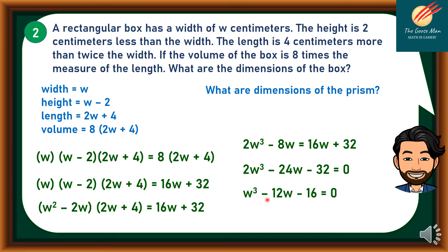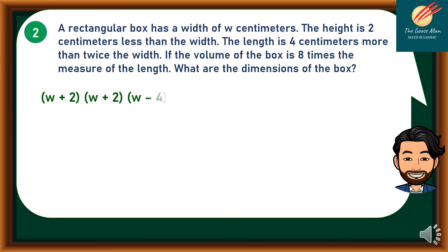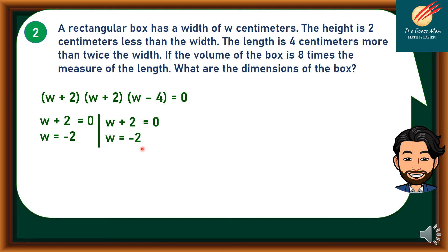Using the factoring method with synthetic division, we come up with (w plus 2) times (w plus 2) times (w minus 4) equals 0. Now applying the zero property: equating w plus 2 equals 0 gives w equals negative 2, and equating w minus 4 equals 0 gives w equals 4.